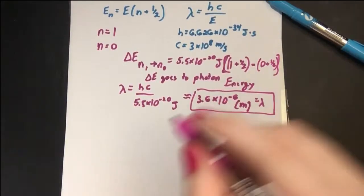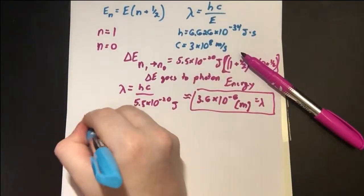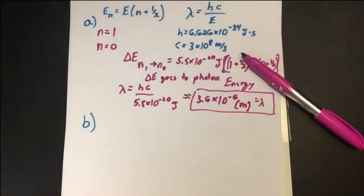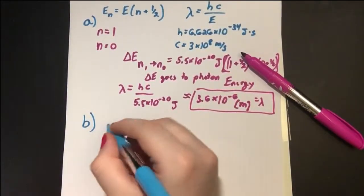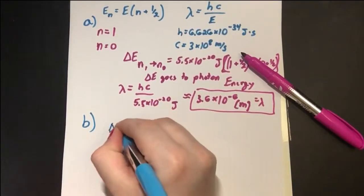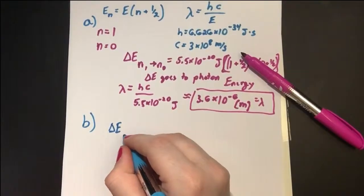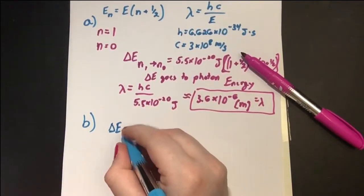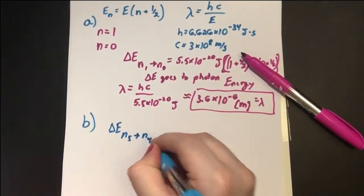Part 2 asks us, so part B, this was part A. Part B asks us, what wavelength photon must a nitrogen molecule absorb to go from n = 4? So we want a ΔE where n = 4 to n = 5 excited state. So n = 5 to n = 4.